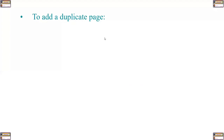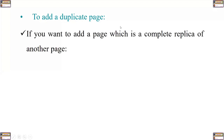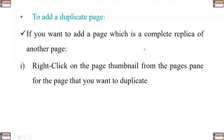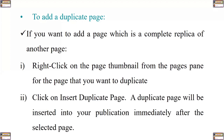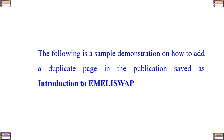However, if you had a page with certain elements and wanted to create a duplicate for it, what you do is: if you want to add a page which is a complete replica of another page, you right-click on the page thumbnail from the Pages pane for the page you want to duplicate, then click on Insert Duplicate Page. A duplicate page is inserted into the publication immediately after the selected page. The following is a sample demonstration on how to duplicate a page in the publication Introduction to MLSwap.